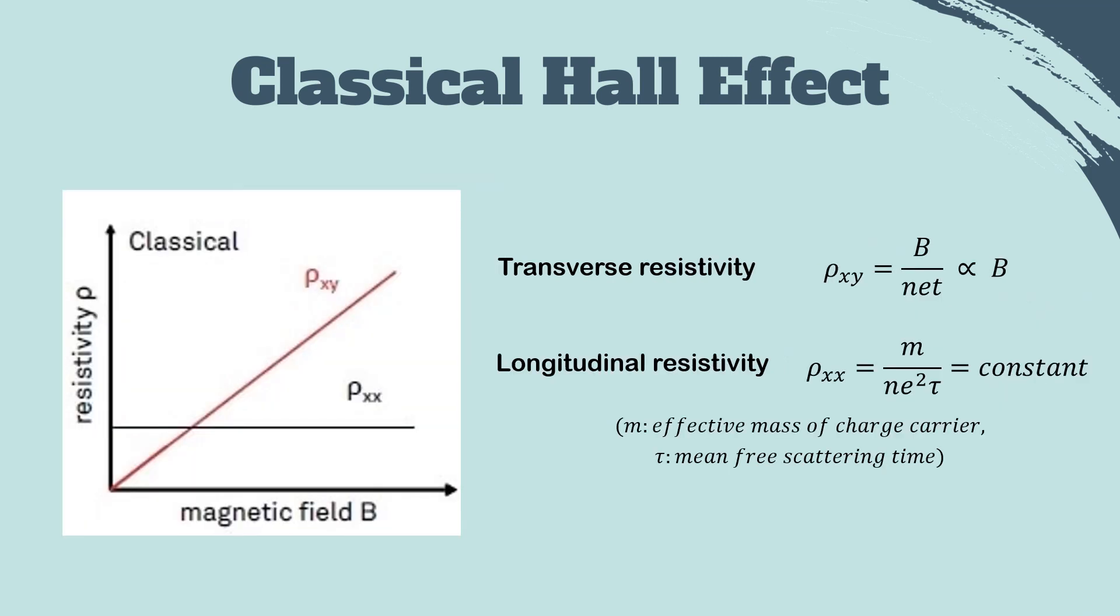From the Hall resistance, we can get transverse and longitudinal resistivity. The transverse resistivity of classical Hall effect is proportional to the magnetic field strength. On the other hand, the longitudinal resistivity is M over Ne squared tau, which is always constant.